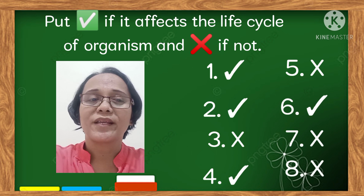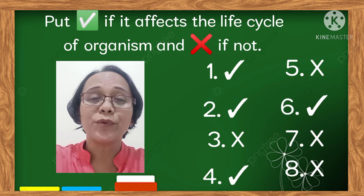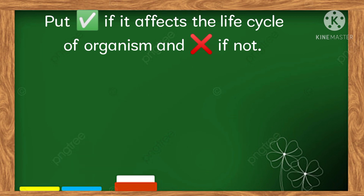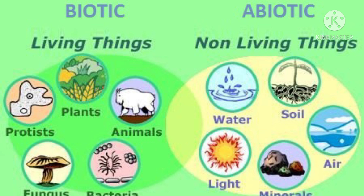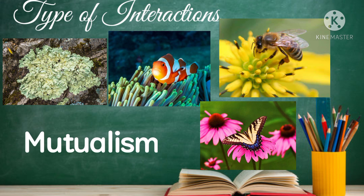Did you get the correct answers? We can now proceed to our next lesson. Living things constantly interact with their environment. Each kind of environment is made up of biotic and abiotic components that interact and depend on one another in different ways. The relationships and interactions of living things can have beneficial and harmful effects. Here are the types of interaction or symbiotic relationships that occur in an ecosystem.